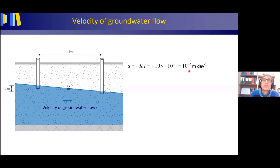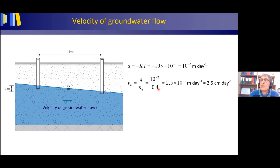To find the effective velocity, we need the effective porosity nₑ of the well-sorted sand, which is approximately 0.4. The effective velocity Vₑ = q / nₑ = 10⁻² / 0.4 = 2.5 cm/day = 2.5 m in 100 days. So the correct answer is (d). A correct calculation always requires knowing the effective porosity — unknown in options (a) and (c) — and the hydraulic gradient, which is incorporated in the specific discharge but not in the hydraulic conductivity alone, discarding option (b).